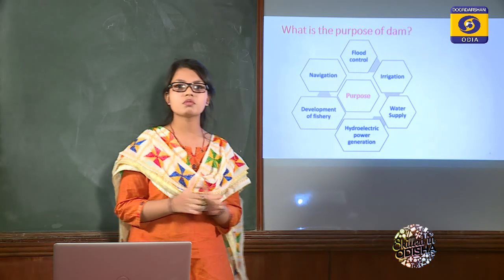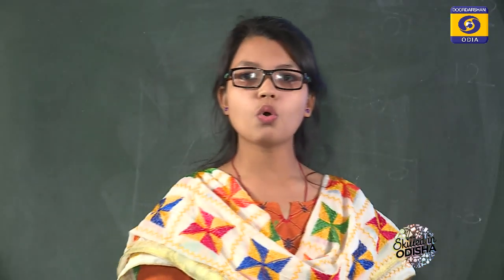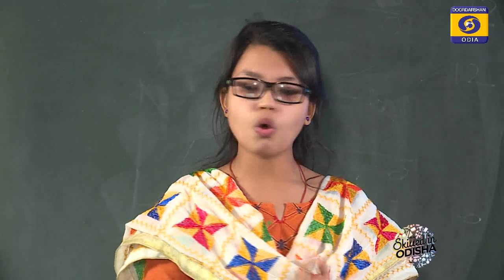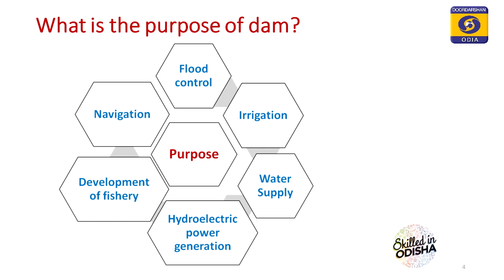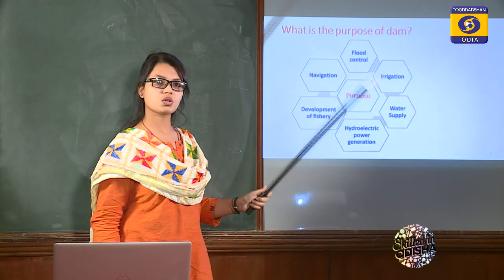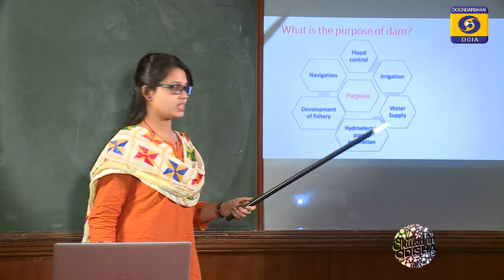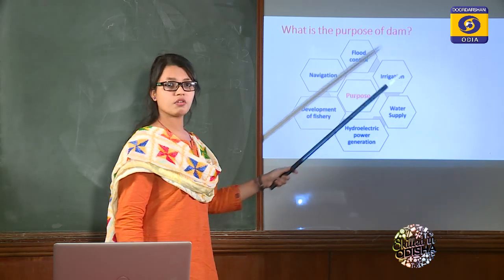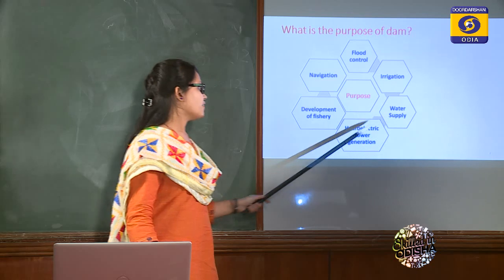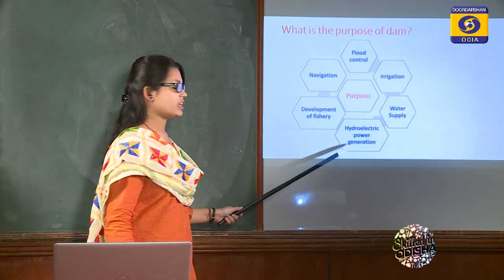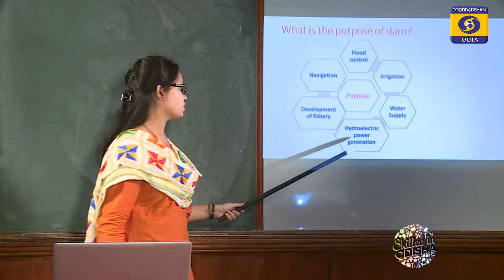What is the purpose of a dam? First, to store the excess amount of water during rainy seasons. Due to heavy rainfall, excess water is stored behind the dam, which protects downstream areas from devastation caused by floods — so flood control is the first purpose. The stored water can also be used for irrigation, water supply for drinking, domestic and industrial uses, and for hydroelectric power generation.